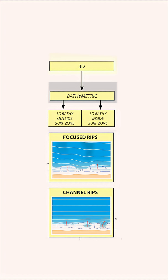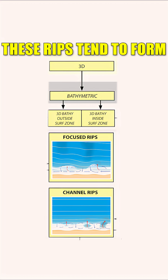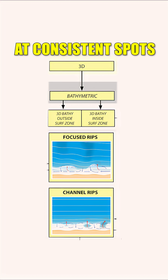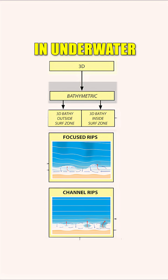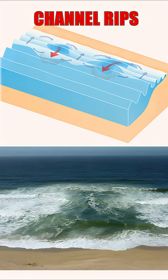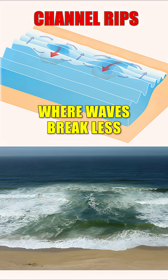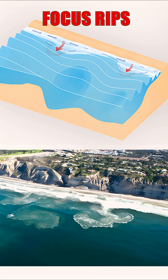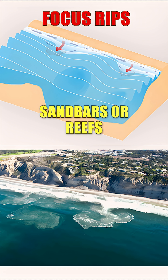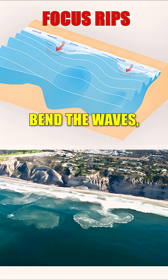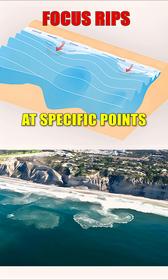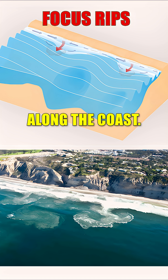Bathymetrically controlled rips tend to form at consistent spots, guided by variations in underwater topography. Channel rips develop in deeper troughs where waves break less. Focused rips occur where offshore sandbars or reefs bend the waves, concentrating their energy at specific points along the coast.